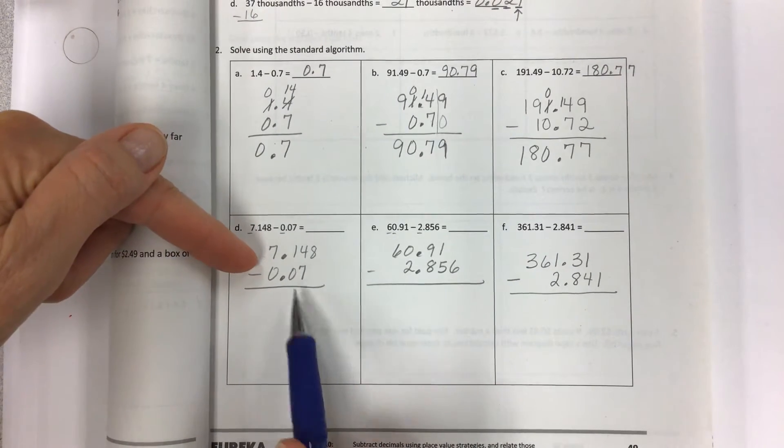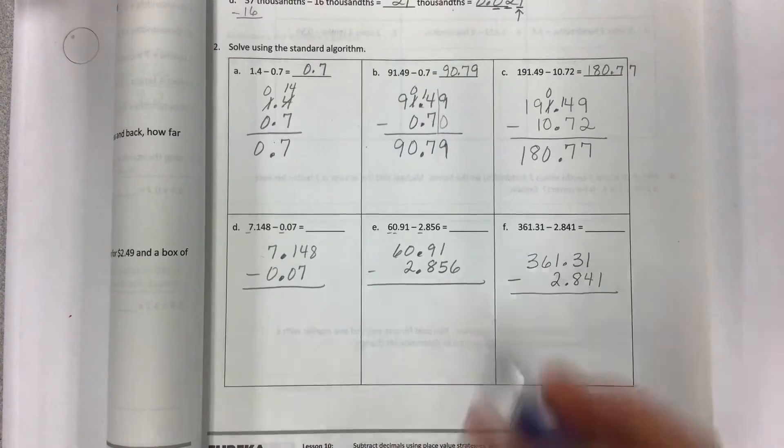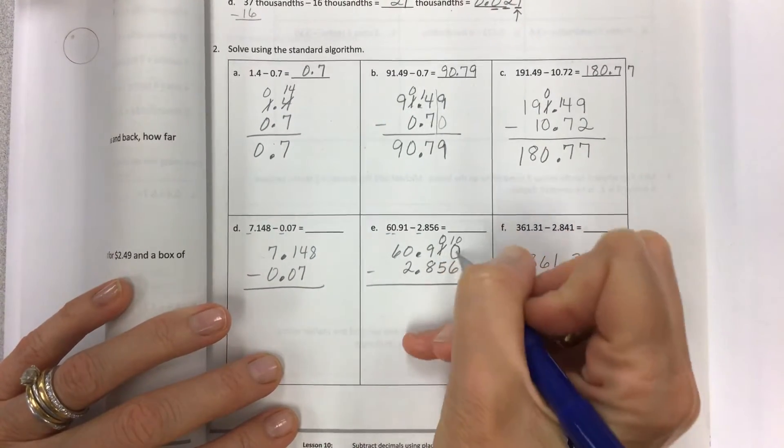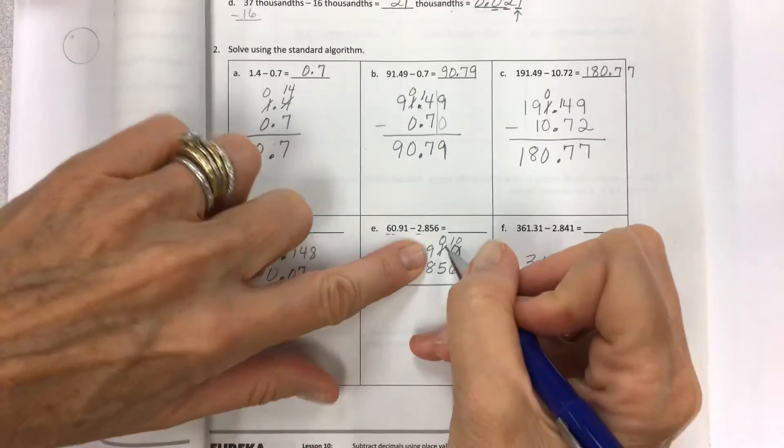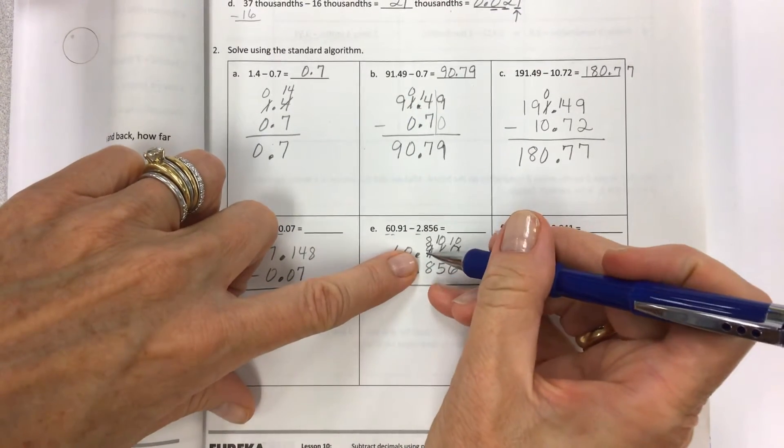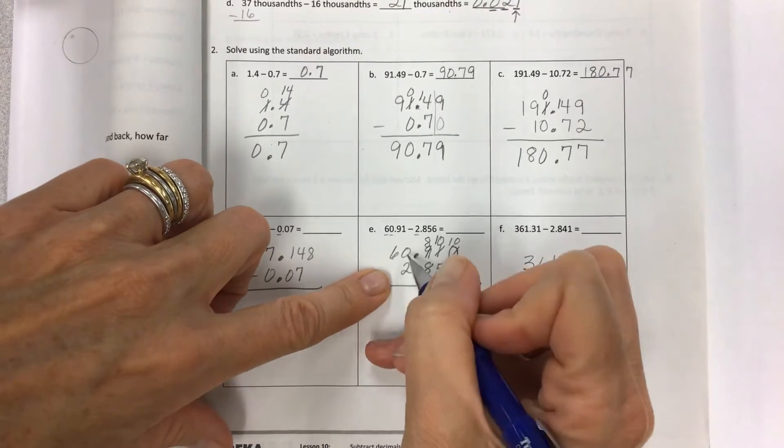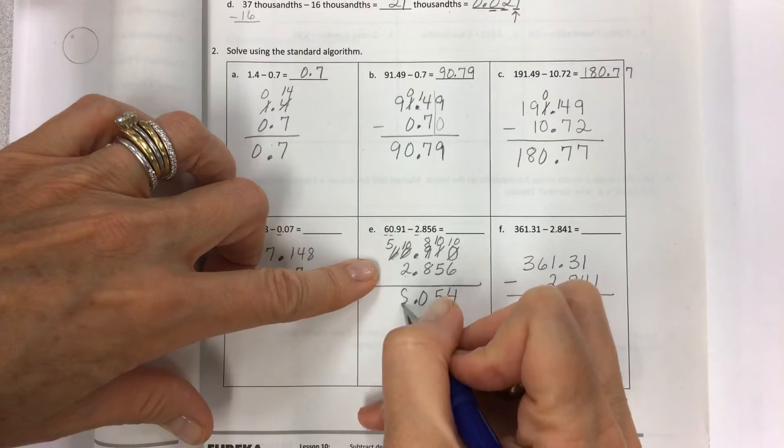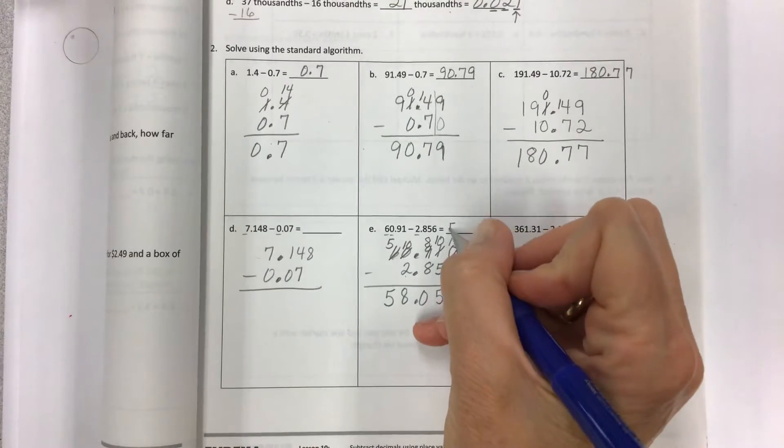Now I'm going to skip this one. Same type of borrowing and regrouping. What do I do here when I don't have a number to pull from? I have nothing here. That's okay. I'm just going to go right next door. Take one, give ten. I had nothing. Now I have ten. It's easy peasy. 10 minus 6, 4. Now I have nothing again. Go next door. That's okay. Take one, give ten. Borrowing is so easy. You just go get one, give ten. 10 minus 5, 5. 8 minus 8, 0. 0 minus 2. No problem. Go next door. Take one, give ten. Now I have 10 there. 10 minus 2, 8. 5 minus nothing, 5. And we end up with 58.054 for our answer.